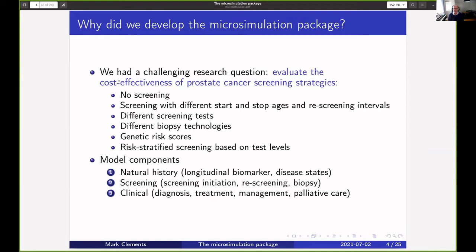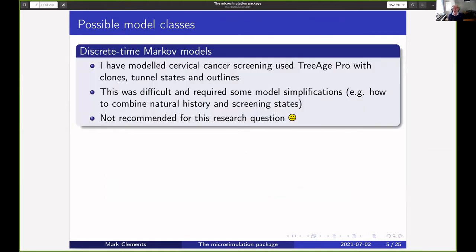What I did a long time ago was I developed a cervical cancer screening model using TreeAge Pro, which was discrete time and deterministic. We used some outlines and clones and tunnel states. Even with that flexibility, it was still difficult to combine the natural history and screening states. After trying it once, I would not recommend it again.